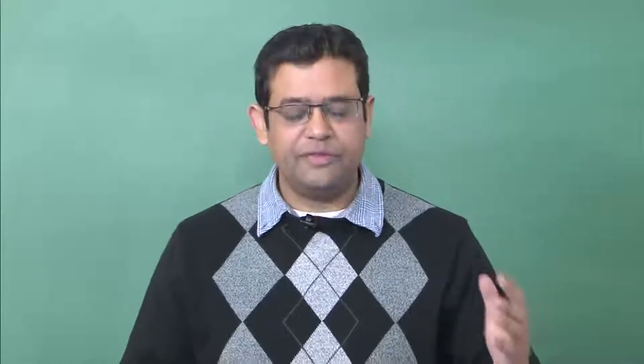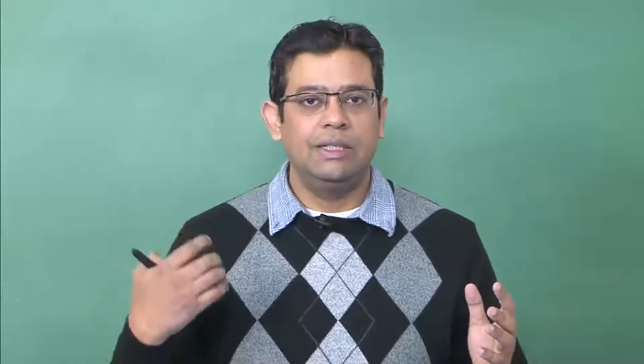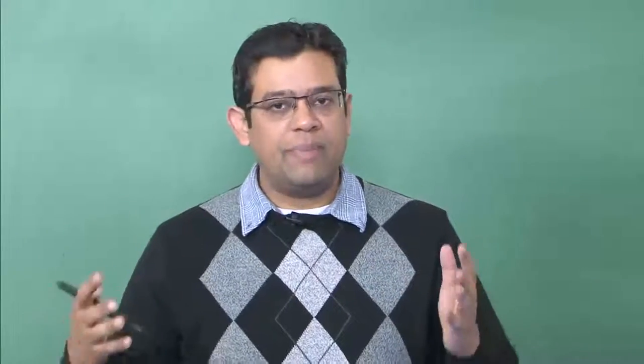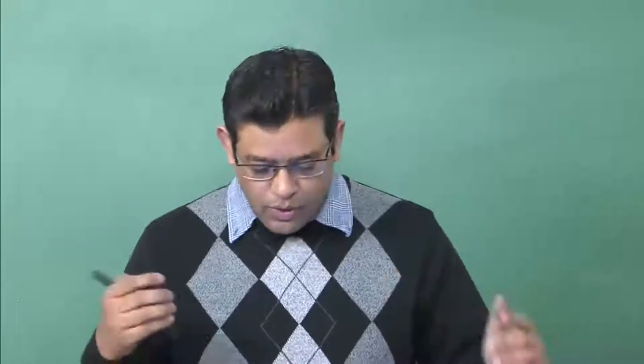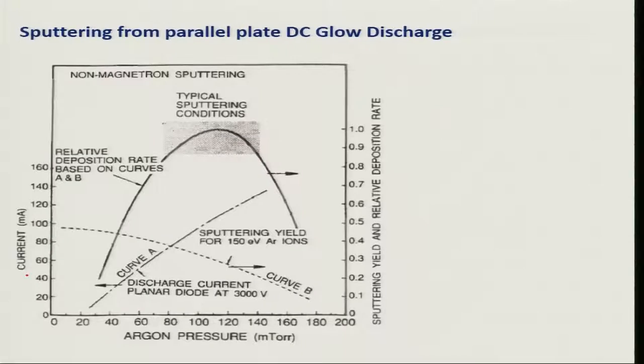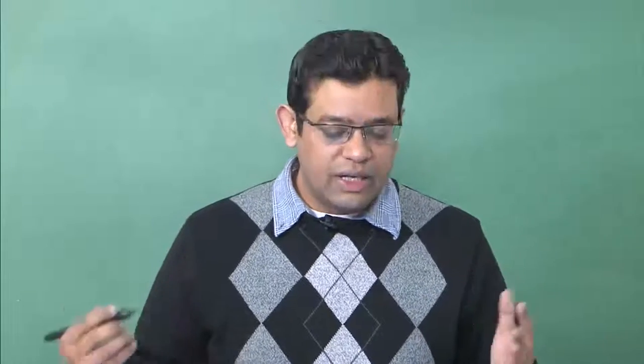Welcome to lecture 9 of the thin film deposition module. In this lecture we will continue our discussion on a physical vapor deposition process called sputtering. Remember in the previous lecture, lecture 8, we had discussed how energetic ions created as part of our plasma interact with the surface of the cathode — our target material which we want to deposit as a thin film on a substrate. Let us look at the various parameters that govern the deposition rate.